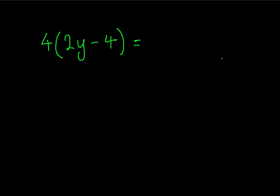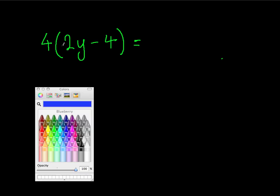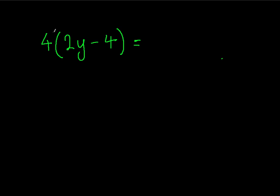So you should know the method where we times the 4 by the 2, which is 8. It's 2y we times it by. Step by step: 4 times 2 equals 8, 4 times y equals 8y. And we've got the minus sign here — plus times by a minus equals a minus. So 4 times by 4 equals 16. And that has been expanded.